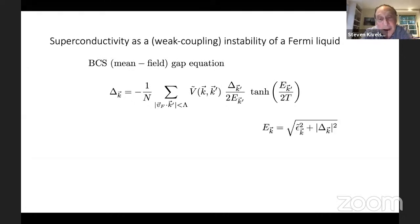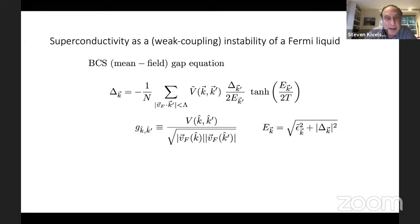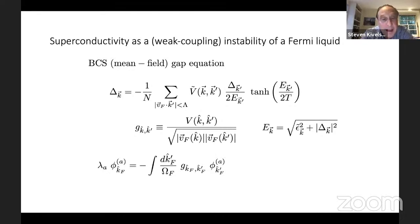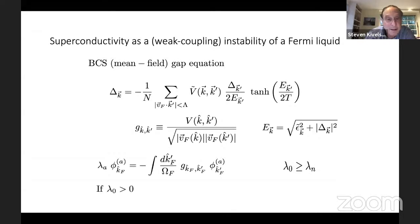E is the spectrum of quasi-particles in the superconducting state. We define a matrix G — a modified form of the effective interaction — and solve the eigenvalue equation treating G as a matrix. Ordering the eigenvalues, the largest eigenvalue is called lambda-naught. If lambda-naught is bigger than zero, there is a superconducting state, and TC goes like the cutoff times e to the minus one over lambda-naught.